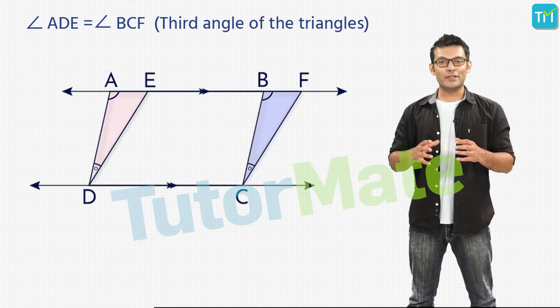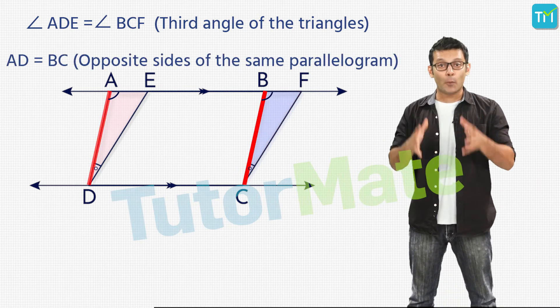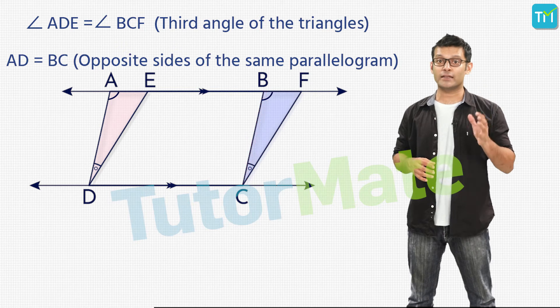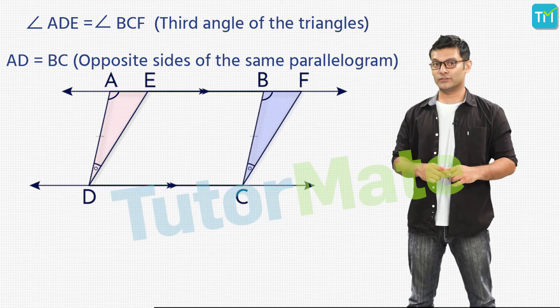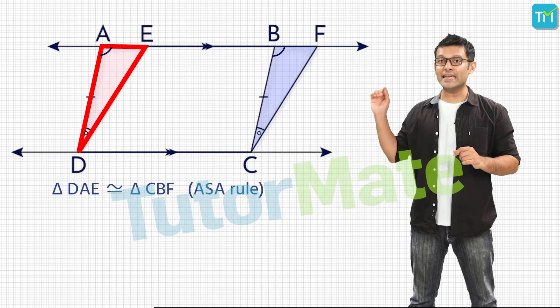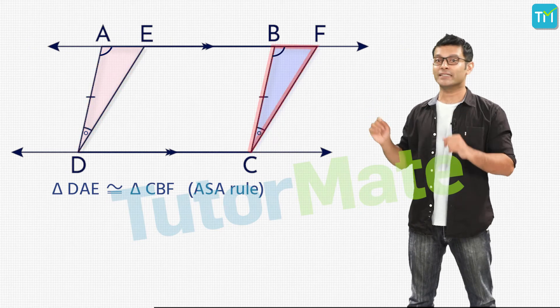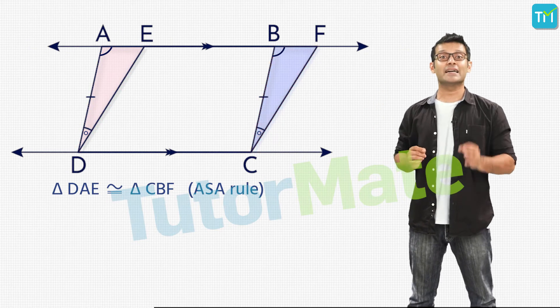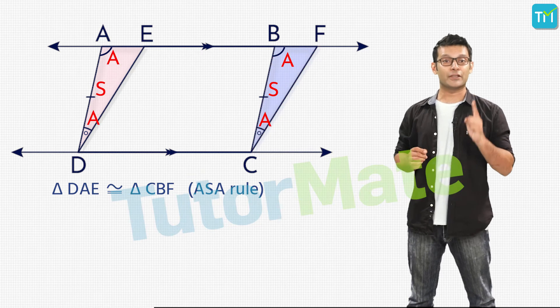Finally, we know that AD and BC are opposite sides of the same parallelogram and hence they are also equal. So we get triangle DAE is congruent to triangle CBF by the angle side angle or ASA rule.